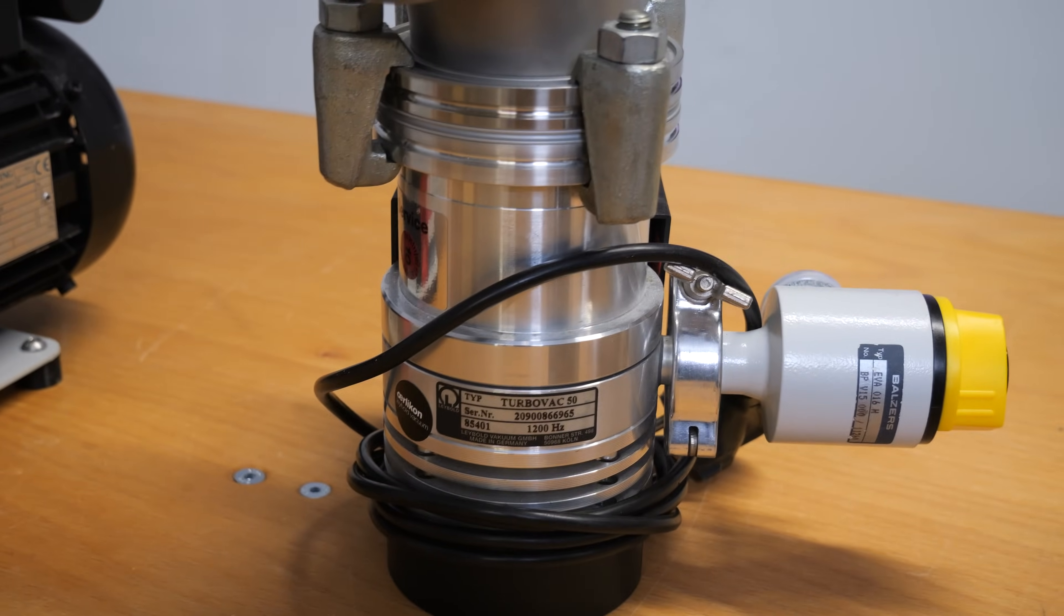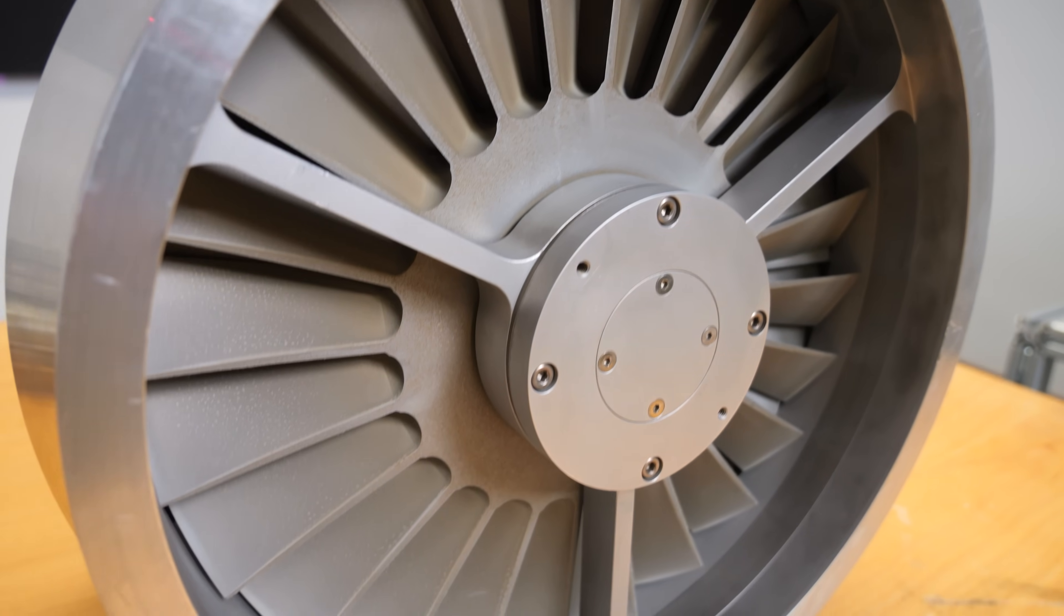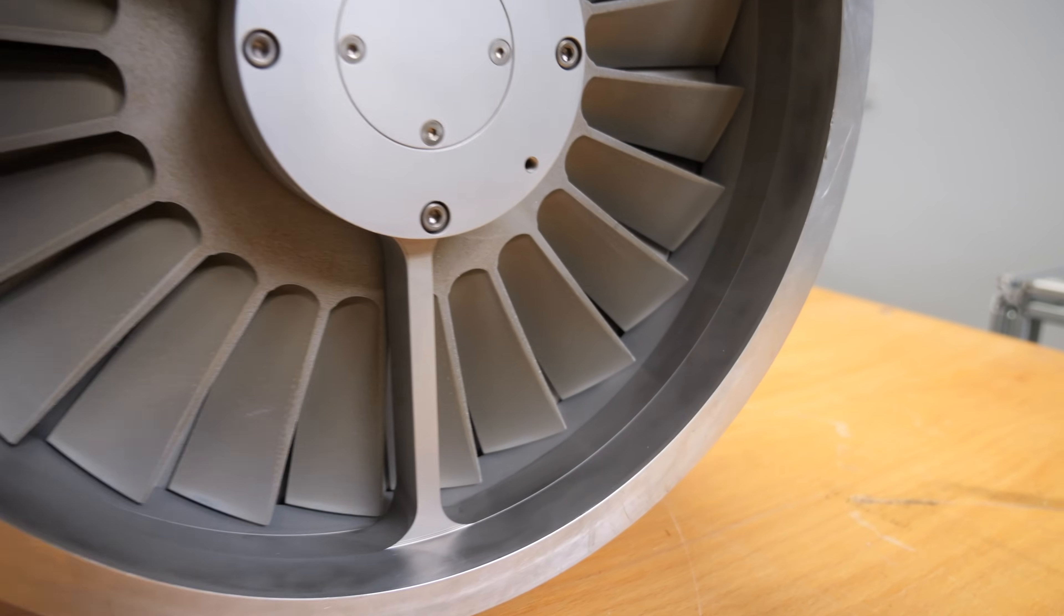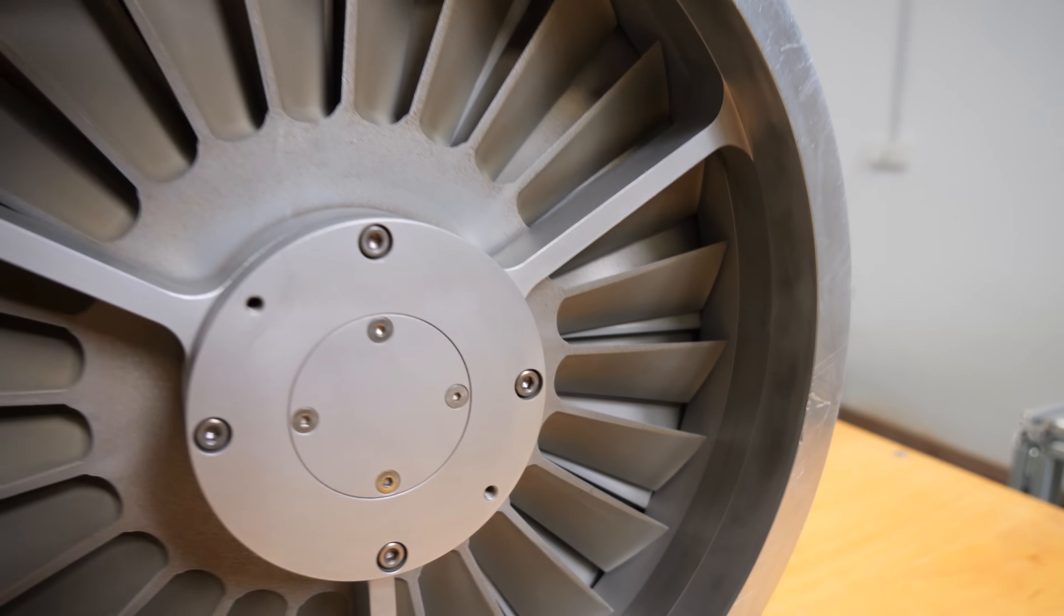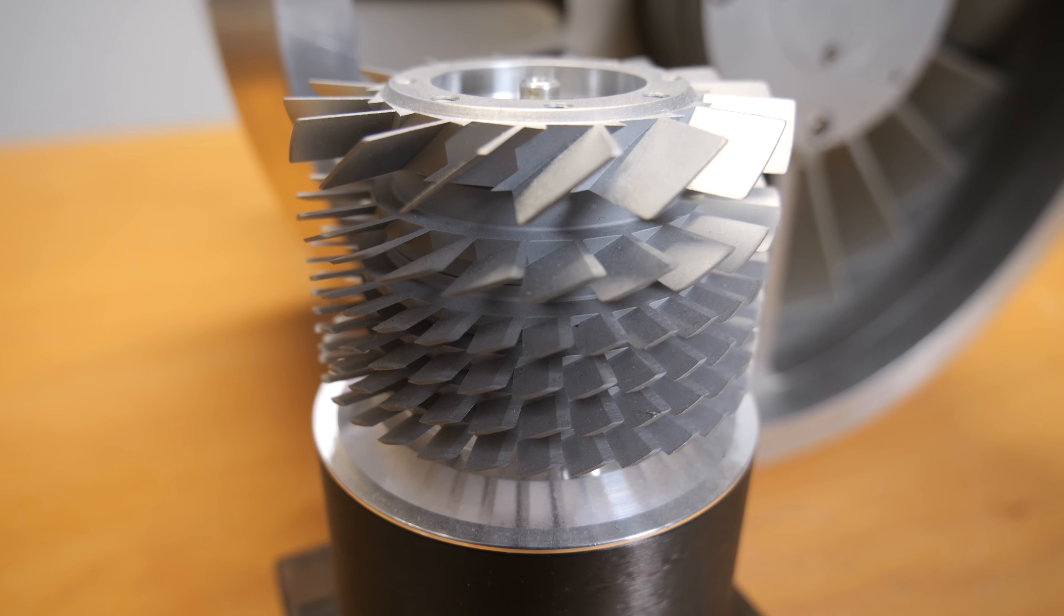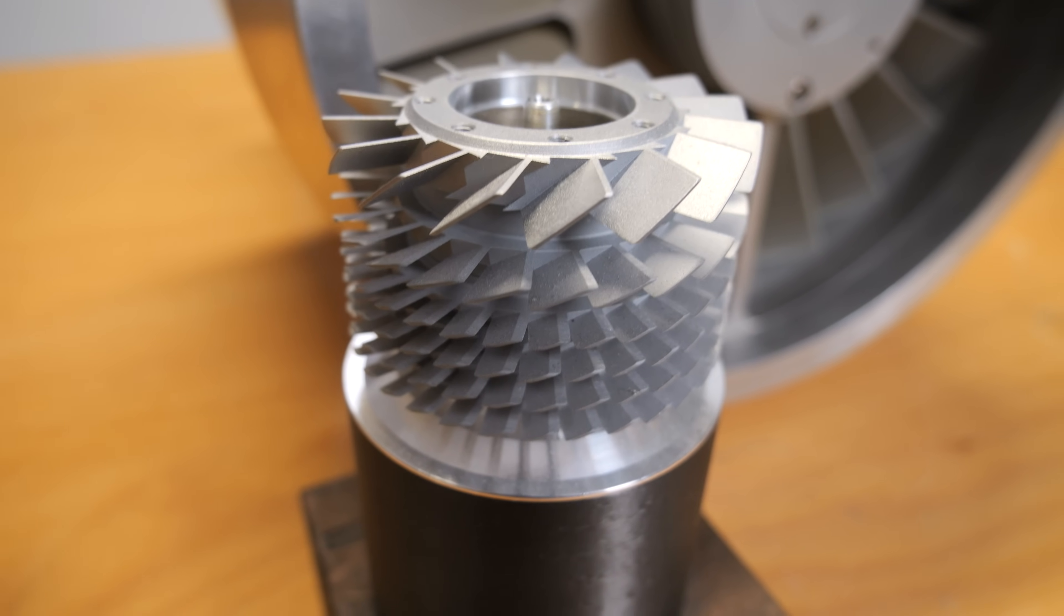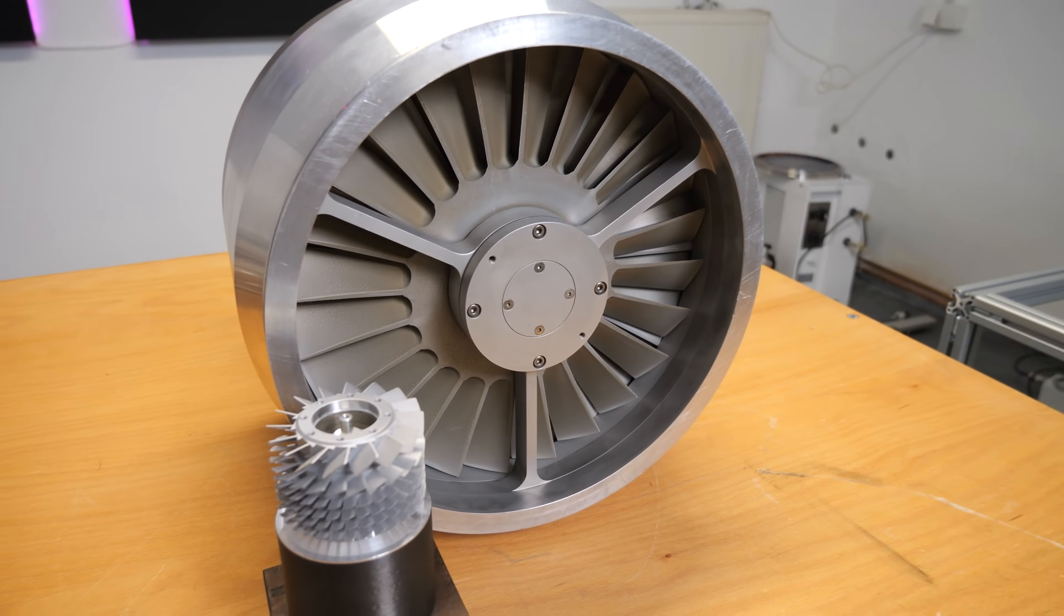So the gas particles move randomly through space at approximately the speed of sound and one must wait for them to encounter the opening where the pump is connected. This is also the reason why it is preferable to choose a large diameter and a short distance when connecting a pump to a chamber. In a turbomolecular pump, the rotor spins at very high speeds. For instance, small models may rotate at about 90,000 rpm, while larger pumps like this one operate at approximately 30,000 rpm.